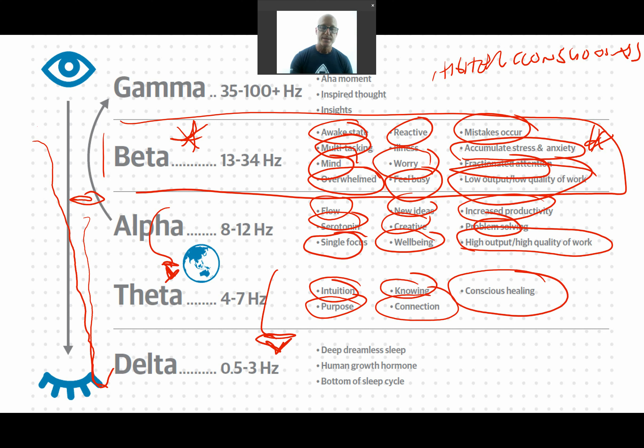Below that is delta. Delta is the deep dreamless sleep, really powerful for rest, recovery, regeneration. It's like two hours a night we spend here when we're healthy, at least thereabouts. In doing so, it's like we park our body for two hours a night and it regenerates.